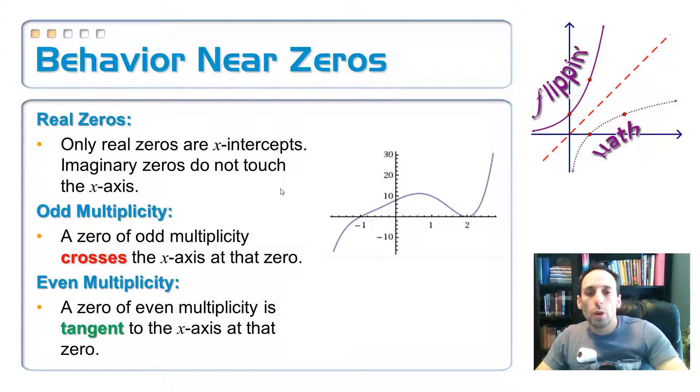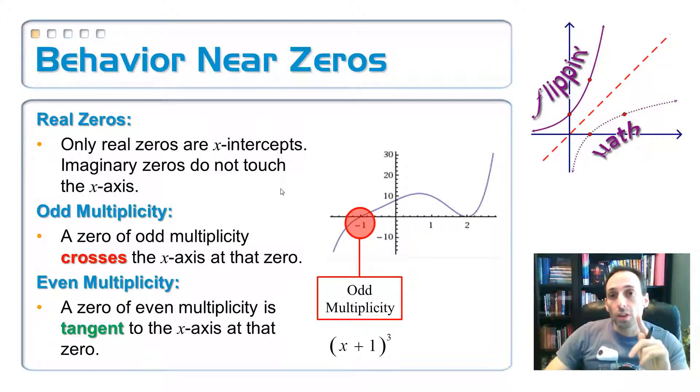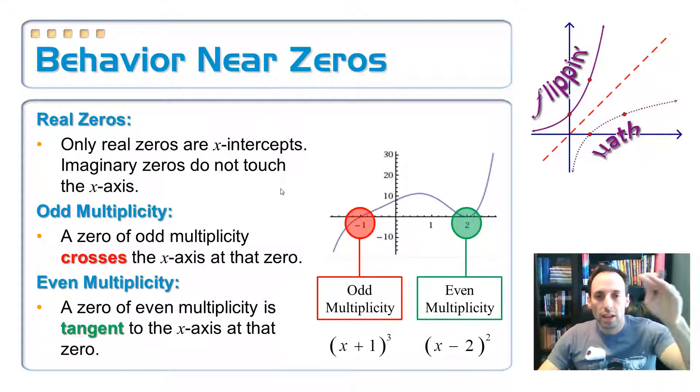So review of what your graph could look like around those zeros. First of all, only the real ones are going to be x-intercepts. And then if you have an odd multiplicity of your x-intercept or of your zero, then your graph is going to cross through there. It may cross straight through if the multiplicity is one or it might jag a little bit if it's more than one. Even multiplicity means that it's going to be tangent to the x-axis at that point.